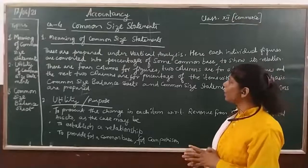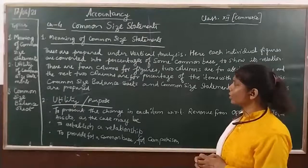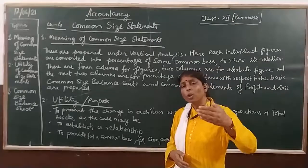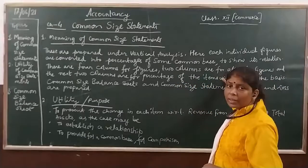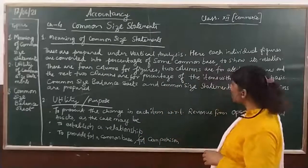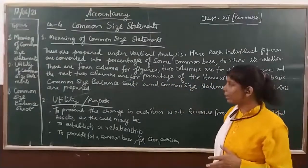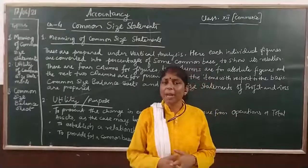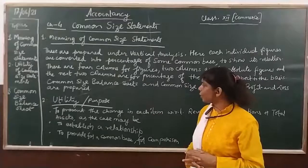Common size statements are prepared under vertical analysis where each individual figure is converted into percentages of some common base to show its relation. There are four columns: the first two columns are for absolute figures, and the next two columns are for the percentage of each item relative to the common base. We prepare both common size balance sheet and common size statement of profit and loss.